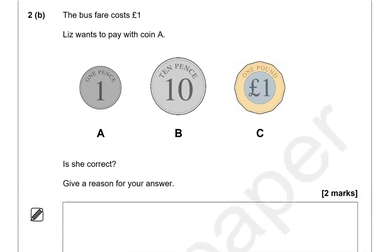The bus fare costs one pound. Leist wants to pay with coin A. Is she correct? Looking at coin A, that is just one pence, not one pound. So is she correct? No, it's just one pence.